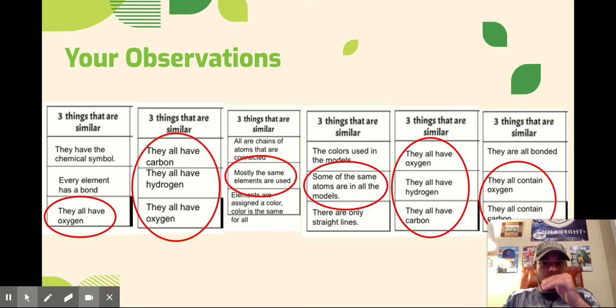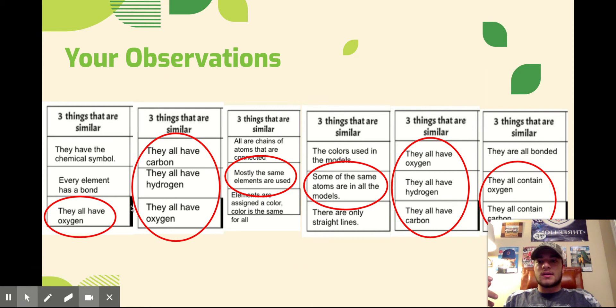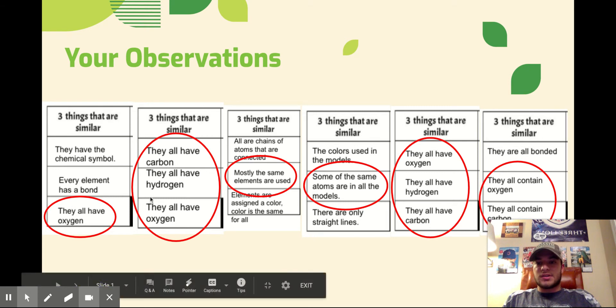So what I want to point out in these randomly picked observations is that they all talk about similar things. They all talk about the fact that these Essential Molecules had oxygens, hydrogens, and carbons. And I've circled where everybody said that.